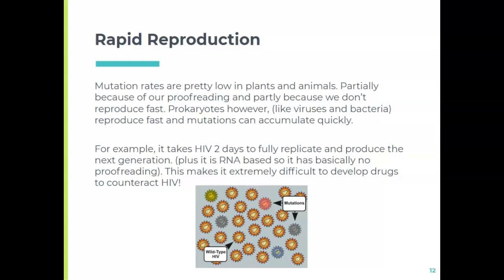Another contributor to genetic variation is fast reproduction — though that's not us. We reproduce very slowly. But viruses or bacteria can reproduce in hours or days, giving you multiple generations in a day or a week. For example, HIV takes two days to replicate and is RNA-based, so there's no proofreading — lots of mutation from copying errors. It's continually changing and evolving, which is why we don't have a cure yet.